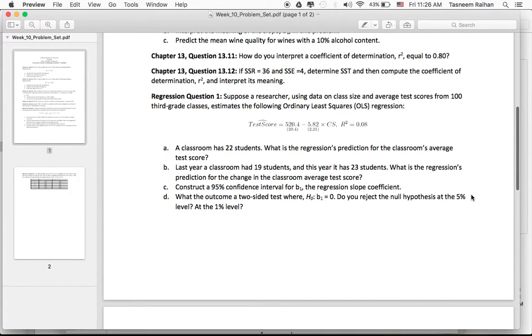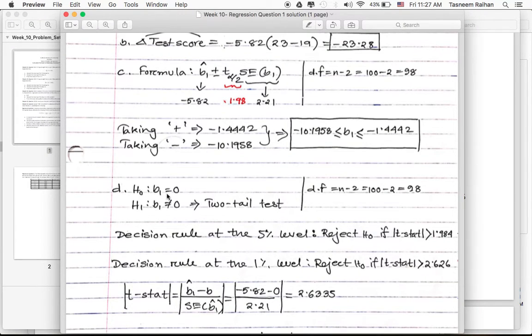Let's quickly do the next question. The question says, what is the outcome of a two-sided test where the null hypothesis is that B1 equals 0, meaning class size has no impact on test score? Do you reject the null hypothesis at the 5% level? Do you reject it at the 1% level? To answer this, we have to find out the T statistic first. The null hypothesis is B1 equals 0, the alternative is B1 not equal to 0. The degrees of freedom is 100 minus 2 equals 98.